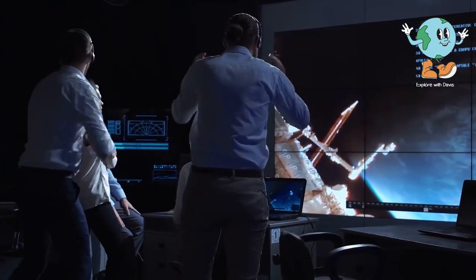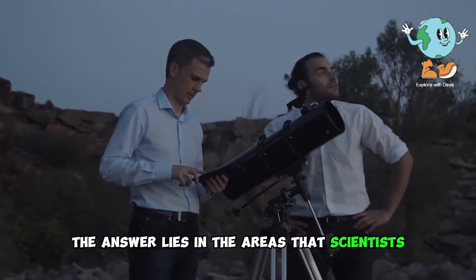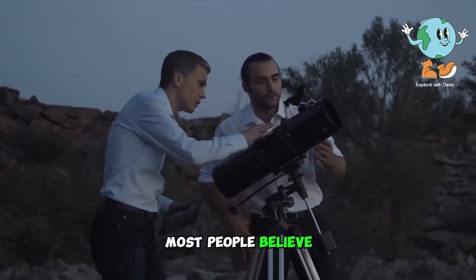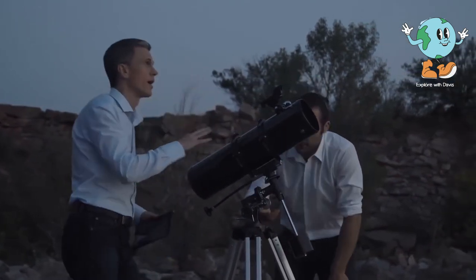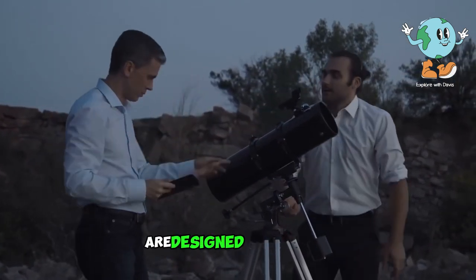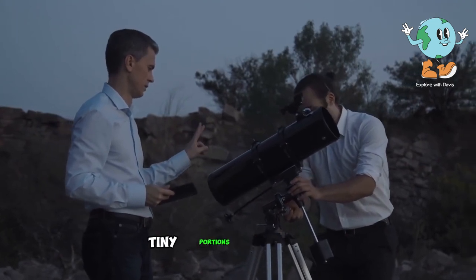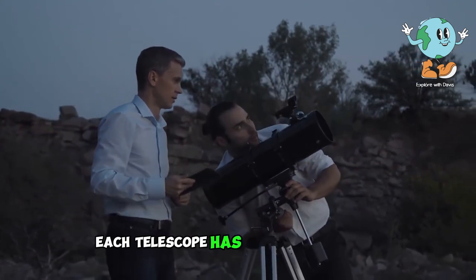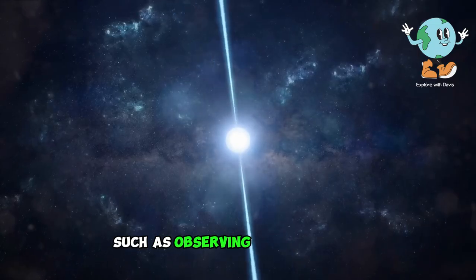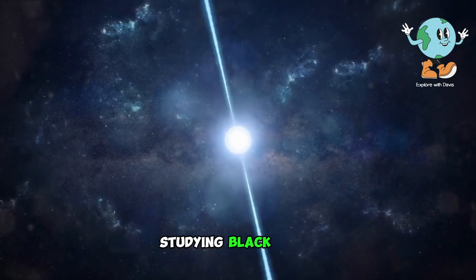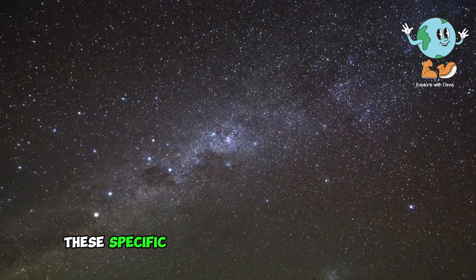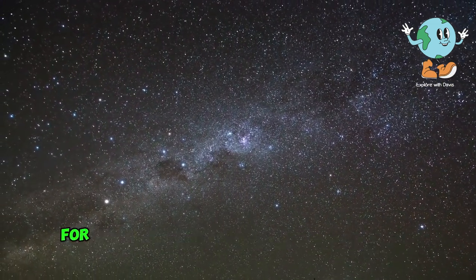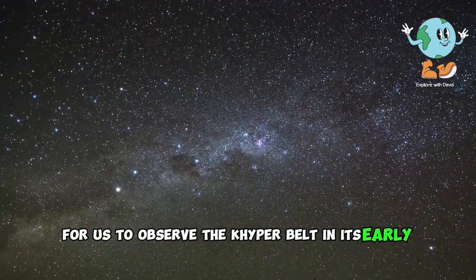So why is the world beyond Pluto completely hidden, with no one having any knowledge about it? The answer lies in the areas that scientists observe in the sky. Most people believe that astronomers go out at night with their telescopes and gaze randomly at the sky. In reality, most telescopes are designed to focus on and examine tiny portions of the sky. Each telescope has a specific purpose, such as observing neutron stars, studying black holes, or observing galaxies billions of light-years away. These specific tasks make it nearly impossible for us to observe the Kuiper Belt in its early stages.